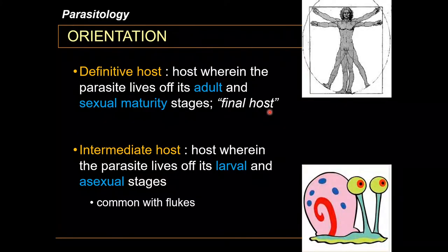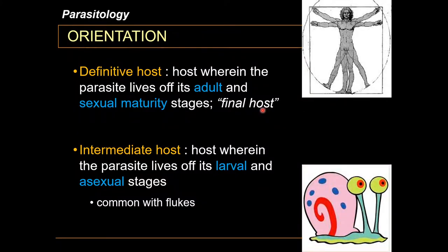The intermediate host is a host wherein the parasite lives off its larval and asexual stages. Intermediate hosts are commonly seen in flatworms or trematodes (flukes), as well as in cestodes or tapeworms.